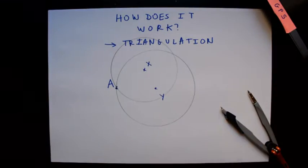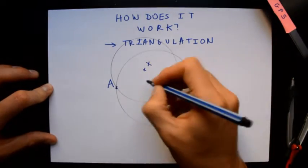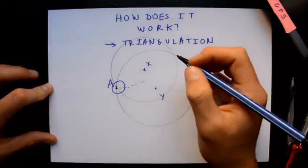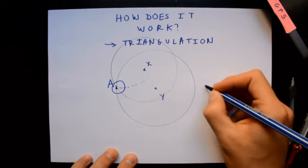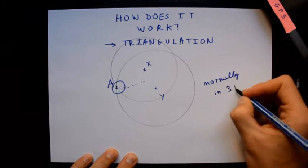In order to avoid the confusion between those two points, the triangulation method is done in three dimensions, so that there is no possible error.